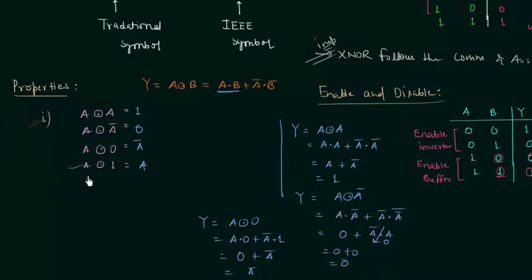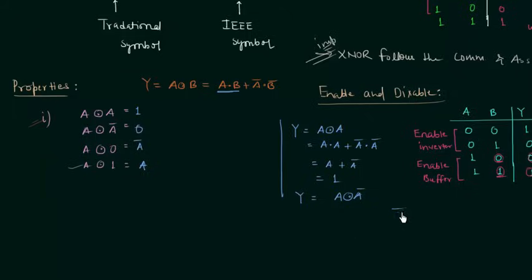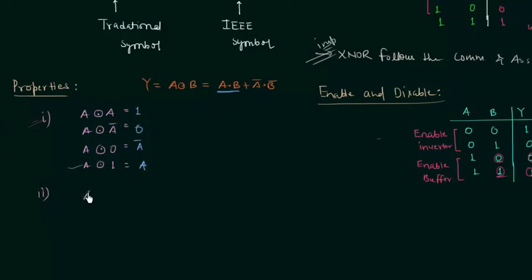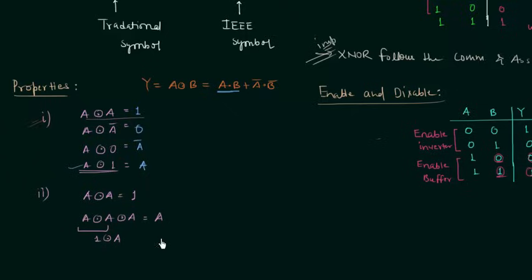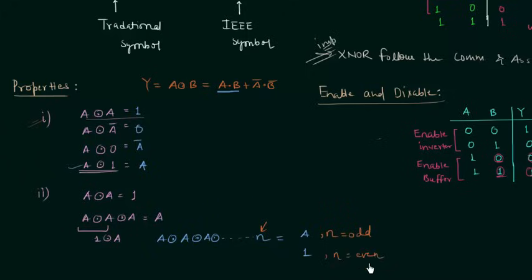Property 2 deals with same repeated inputs. We know A XNOR A = 1. For A XNOR A XNOR A XNOR A: grouping gives 1 XNOR A, and 1 XNOR A = A. Generalizing for N same repeated inputs: the output is A when N is odd, and 1 when N is even.